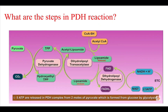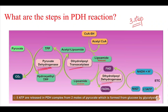The PDH reaction is a 3-step reaction. In the first step, pyruvate dehydrogenase catalyzes the decarboxylation of pyruvate. In this step, the coenzyme thiamine pyrophosphate is converted to hydroxyethyl thiamine pyrophosphate.